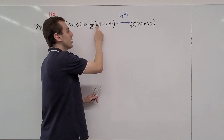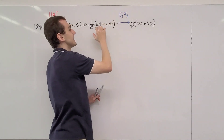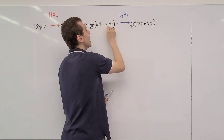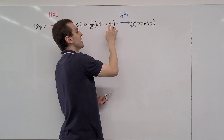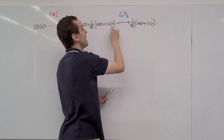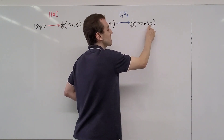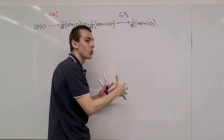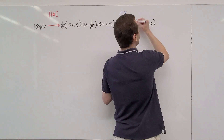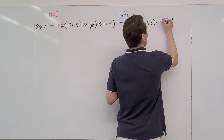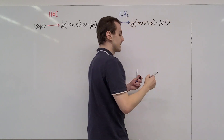When the first qubit is zero, the CNOT acts as the identity. But when the first qubit is one, that activates the gate and turns the second qubit's zero into a one — it's acting just like a controlled bit flip. This state, 1/√2(|00⟩ + |11⟩), we can denote as φ+. It is one of the Bell states.